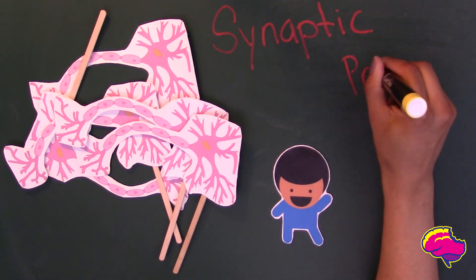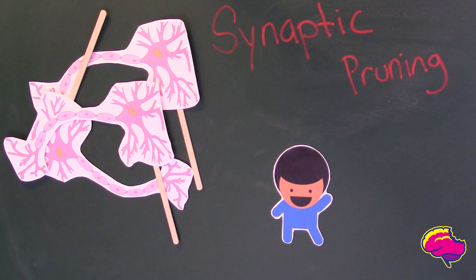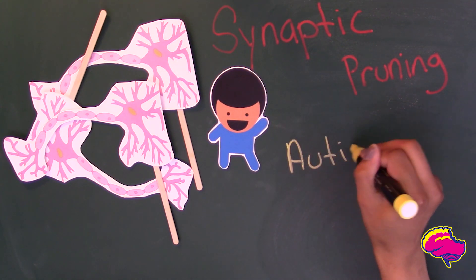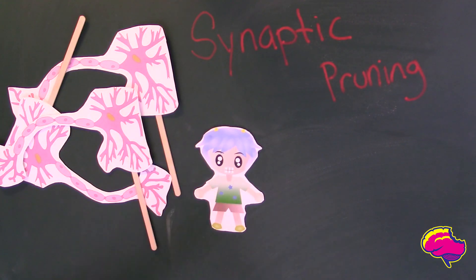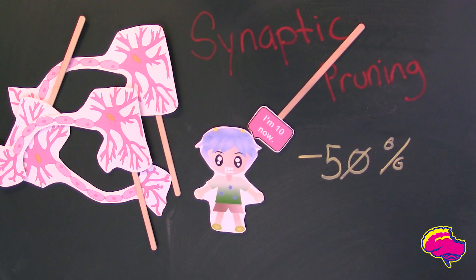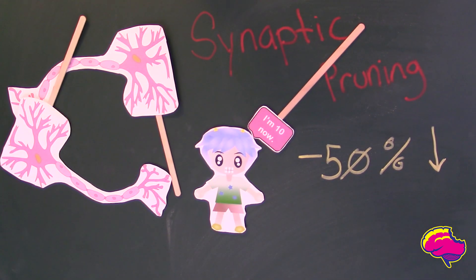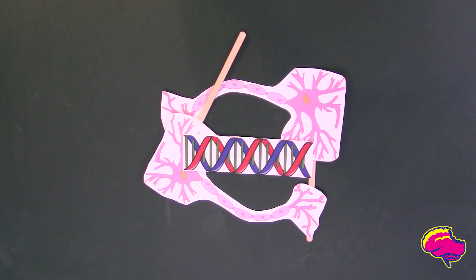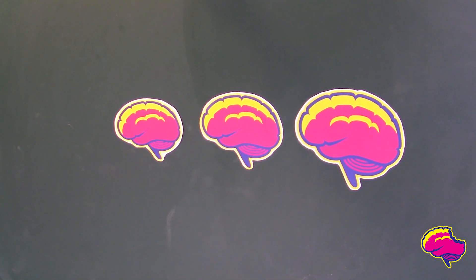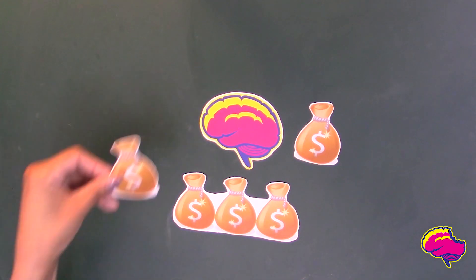An event known as synaptic pruning begins around the age of 2, where many of the unused connections are severed. It's problems with the synaptic pruning process that have been associated with autism. Back to synaptic pruning — this is a major brain event that has been found to last a few years. By the time a child reaches 10 years of age, 50% of synapses that were present at the start of the event are gone, and the connections strengthened by repeat use are the ones that remain. Thus, synaptic pruning is a genetically coded event that takes place in an ordered fashion, but the connections that remain are shaped by one's environment.